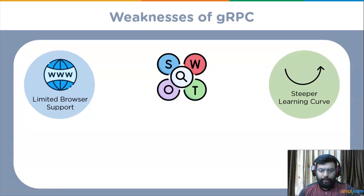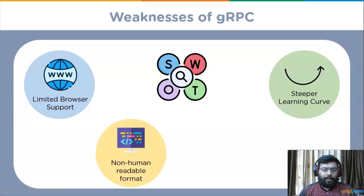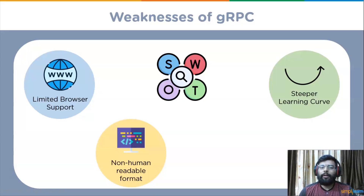The next consideration is a steeper learning curve. Many teams find gRPC challenging to learn — they need to become familiar with protobuf and find tools to deal with HTTP/2 friction. This is a common reason why users prefer to rely on REST for as long as possible. The next consideration is non-human readable format — protobuf compresses gRPC messages into a non-human readable format.